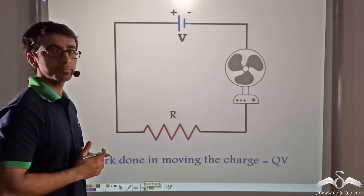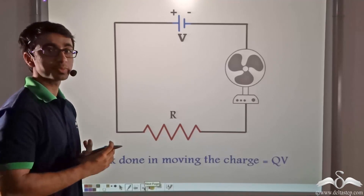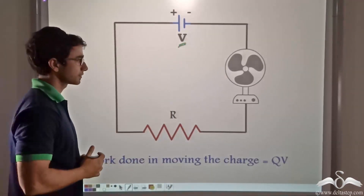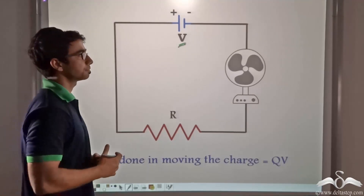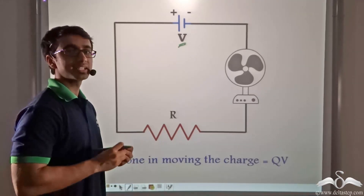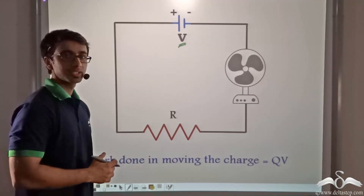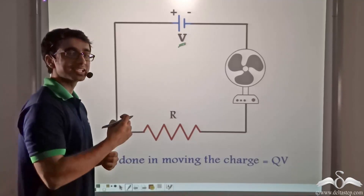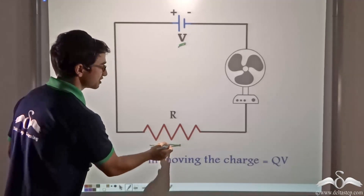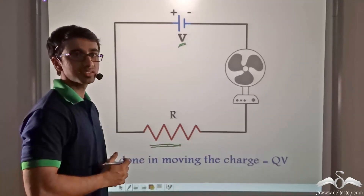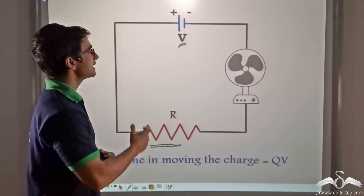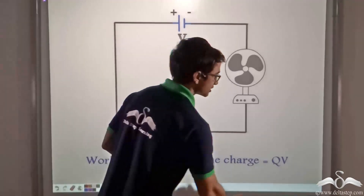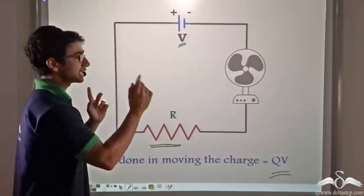Let us consider a simple example to derive mathematically how we can express this heat. We have a simple circuit where the cell is providing a potential of V volts, and we have connected a simple appliance like a fan. Every appliance connected in a circuit has a resistance of its own. This resistance is often unfavorable because in the case of a fan, its job is to rotate through the incoming electricity. The work done to move the charges is given by Q multiplied by the potential difference across the circuit.